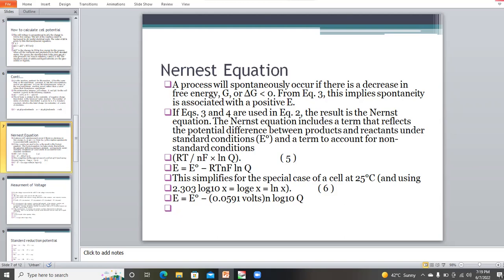The Nernst equation includes a term that reflects the potential difference between the products and the reactants under standard conditions, E0, and a term that accounts for non-standard reactions. This applies for the special case of cells at 25 degrees Celsius. E equals E0 minus 0.059 volts/n log10 Q.